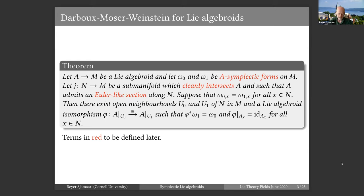This is an extension of that to a setting of Lie algebroids, where these two forms are A-symplectic forms for some Lie algebroid A. You need to put in some extra conditions: namely that the sub-manifold should cleanly intersect the Lie algebroid, and that the algebroid should admit an Euler-like section along this sub-manifold. These terms I haven't explained yet — I will come back to them later. But this is just an extension of the Darboux-Moser-Weinstein theorem to Lie algebroids.